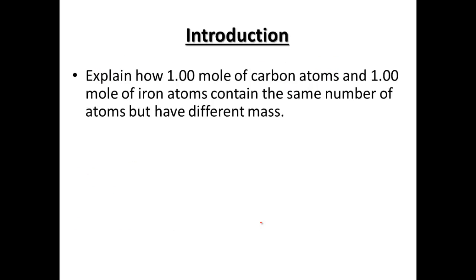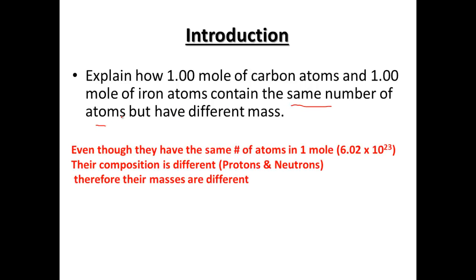One of the things we're going to look at is how one mole of carbon atoms and one mole of iron atoms contain the same number of atoms but different masses. Even though they have the same number of atoms in one mole — they both have 6.02 × 10²³ particles — the composition, the number of protons and neutrons they have, is different. So their masses are different.